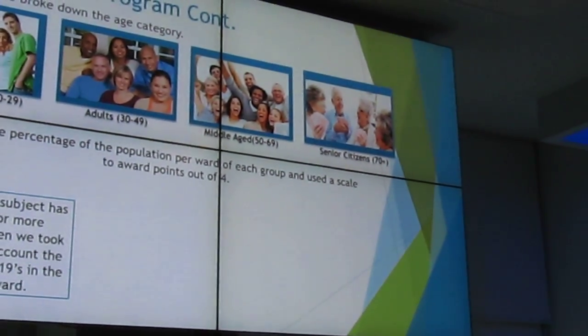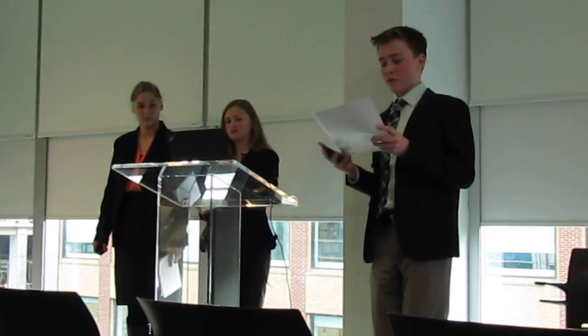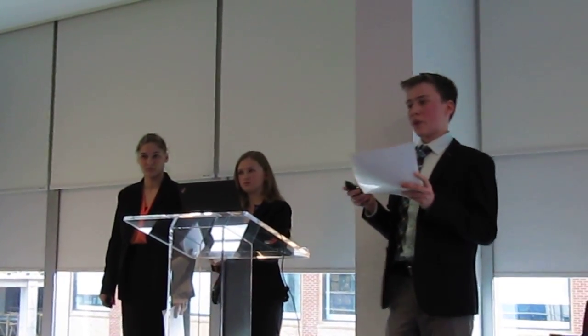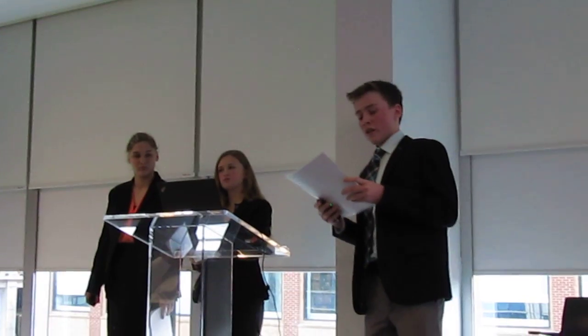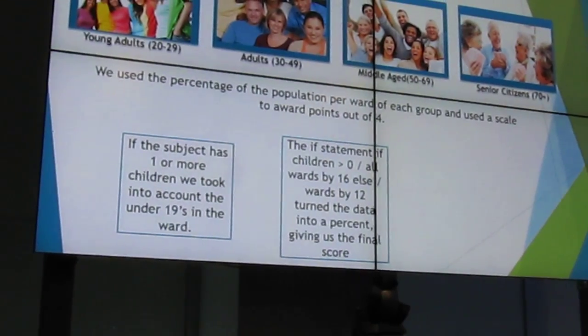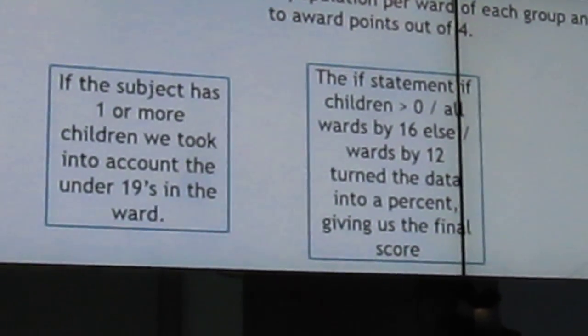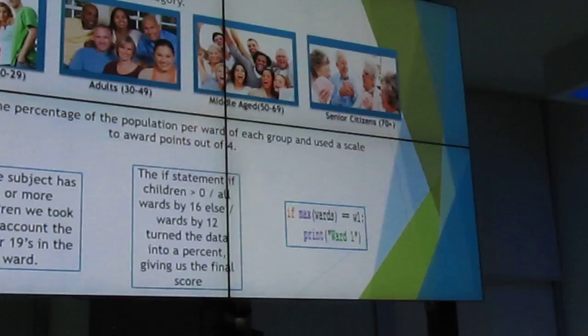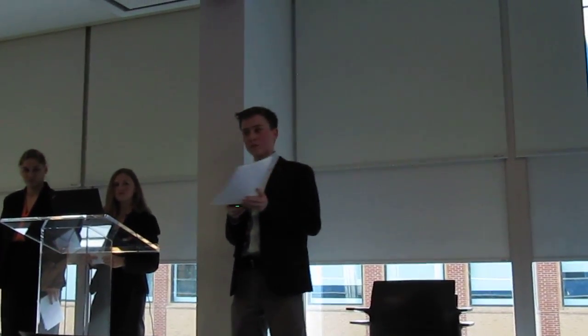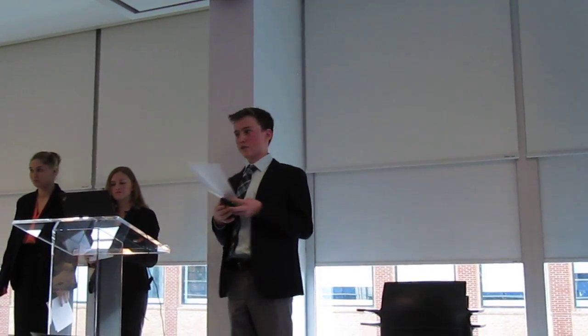For the children variable, we used the exact same method as the age grouping, except it only came into effect if the number of children was greater than one. At the end of the scoring, we had a raw number that we needed to convert to a percentage for easier comprehension. We did this by dividing by 12 normally, or by 16 if the children variable was activated, and then multiplying by 100. To display the results, we added all the wards to a list and printed the max of the list, showing all wards equal to the highest score as well as their score. There's also an option to print all of them, which is how we got the graphs for all the scores.